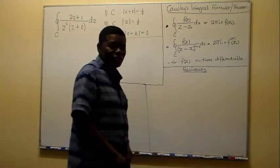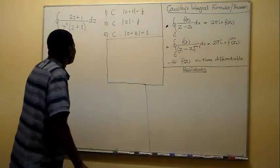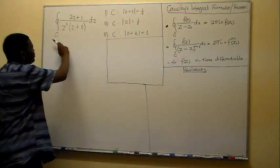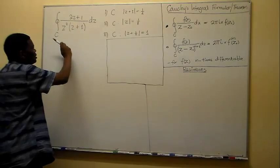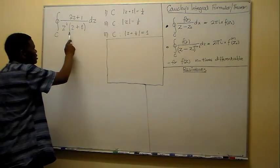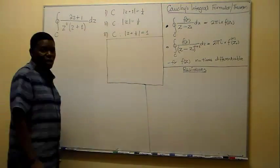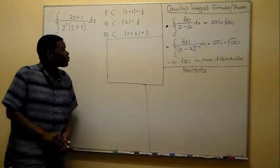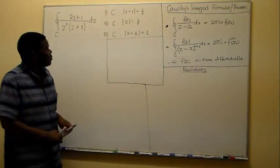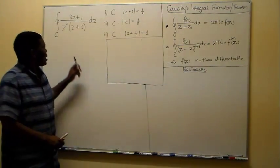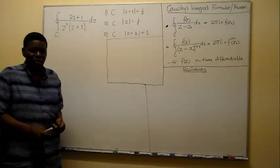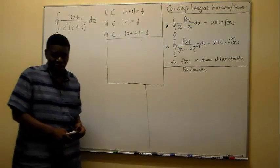In this case, I'll go to an example here, which is the integral of (2z + 1) over z-squared times (z + 1) dz. In this problem, you must be careful with this type of problem because the answer depends on the type of circle which you are given.